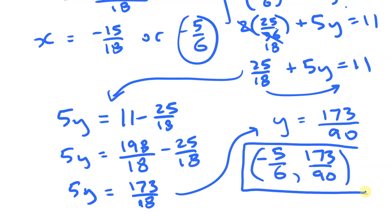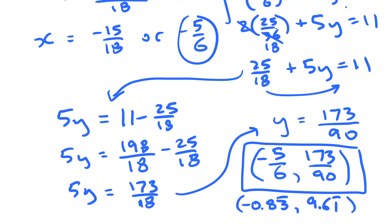So my solution is x = −5/6 and y = 173/90 — that one single solution. In decimal form, that is approximately x ≈ −0.8̄3̄ and y ≈ 1.9̄2̄. If you prefer decimals you could just use a calculator instead of doing the fraction work.